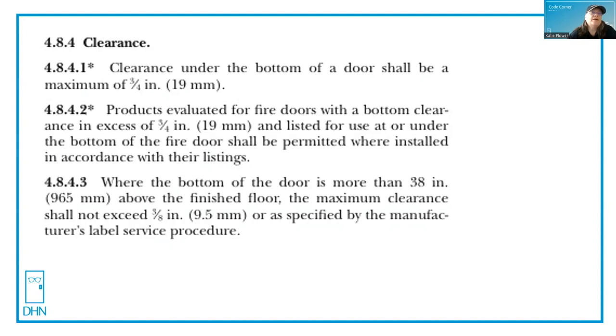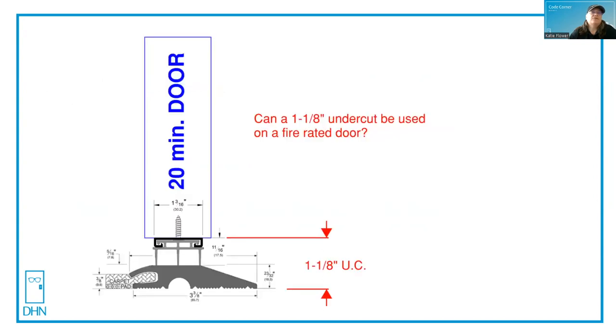When you look at the difference, undercut is from the bottom of the door to the bottom of the frame. If you've got a raised threshold that is half an inch high, then you could have an additional three quarters of an inch above that, or an actual undercut of an inch and a quarter.